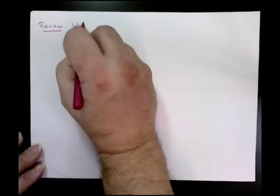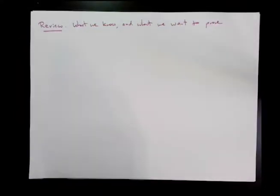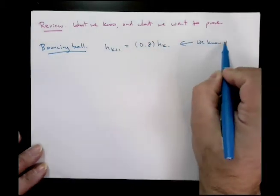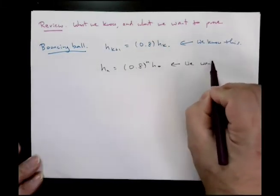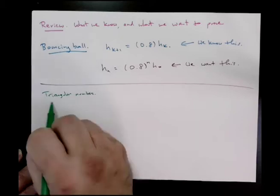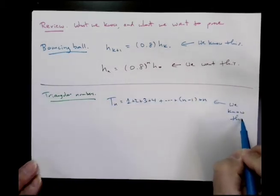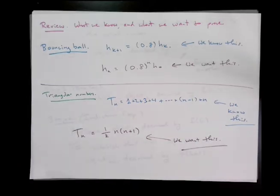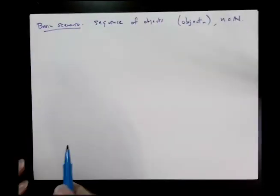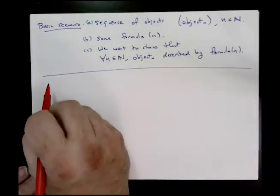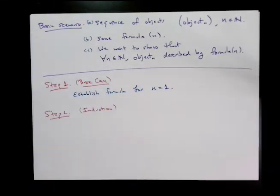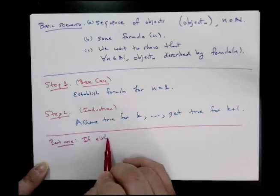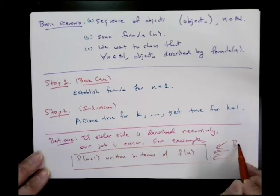So let us review. We have two conjectures so far. For the bouncing ball, we conjecture that the height of the nth bounce is 0.8 to the n times the original height. For triangular numbers, we conjecture that the nth triangular number is n times n plus 1 over 2. Notice that both of these conjectures are in the following form: for all n in the natural numbers, the nth object of some list can be described by some formula that depends on n. So here's the punchline. When we want to prove a statement like that, it is time to bring in the induction.